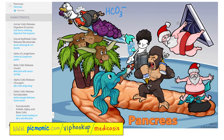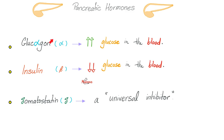Glucagon is catabolic — it wants to increase glucose in the blood. Insulin is anabolic — it wants to decrease glucose in the blood: take that glucose, put it into the cells away from the blood, and help it become glycogen because you are anabolic. Somatostatin is a universal inhibitor — it inhibits everything.